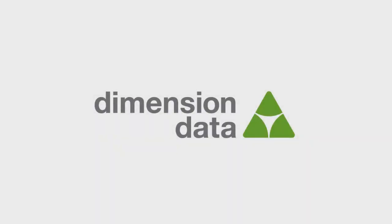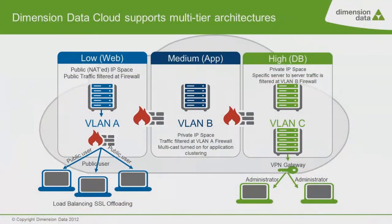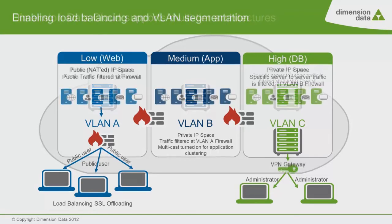Now it's time for a brief wrap-up of the video series you've just watched on building a multi-tiered cloud application. In the previous segments of this series, we've seen how to set up a simple multi-tiered application in the Dimension Data Cloud. The web, application, and data tiers were deployed on separate cloud networks, and we've shown how to apply security rules via ACLs and enable fault tolerance using the load balancing feature.